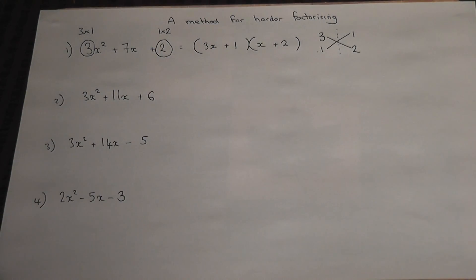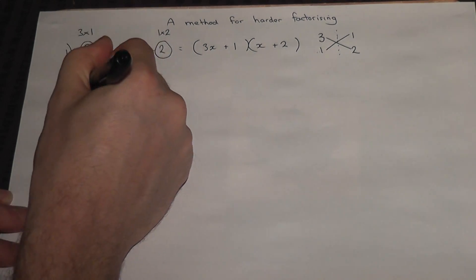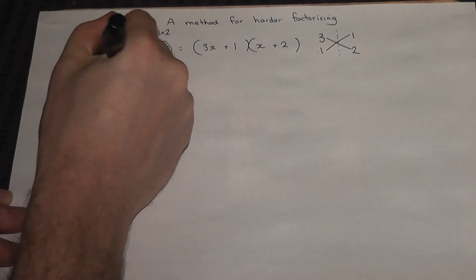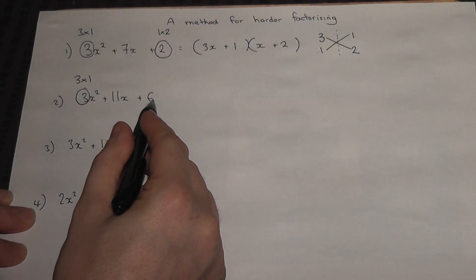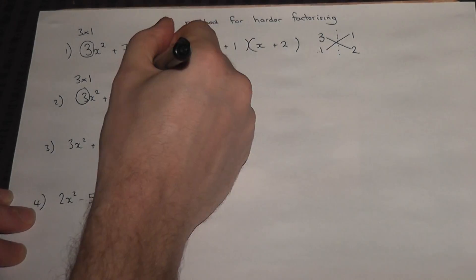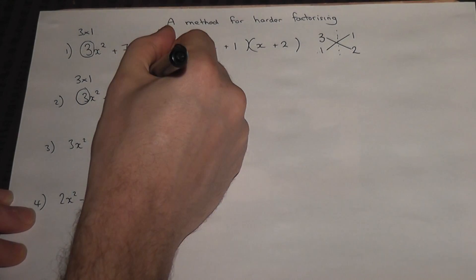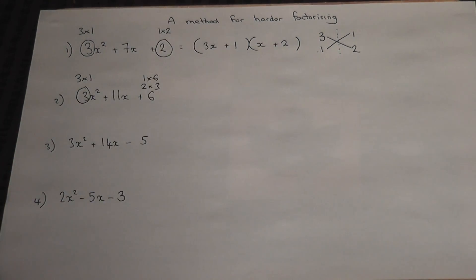We'll look at another example to show how it still works. Again it's 3x squared, so the only factor pairs are 3 and 1. But for the 6, it's either 1 times 6 or 2 times 3. So we have two options to consider, one of which will work.